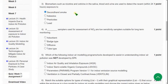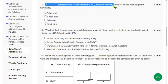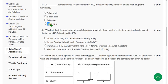Moving on to the fourth one: A dash sampler used for assessment of NO2 or low sensitivity samplers suitable for long-term monitoring. For the fourth question, the correct answer is fourth option: tube type samplers. So mark fourth option as correct answer for fourth question.